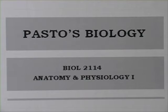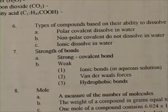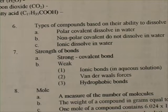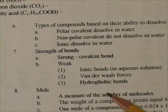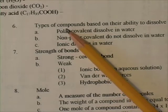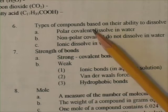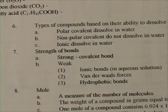Pasto's biology, topics from the study guide. Another concept in this section that takes a little explaining to understand is the types of compounds based on their ability to dissolve in water. This is item number six on page 2.8.